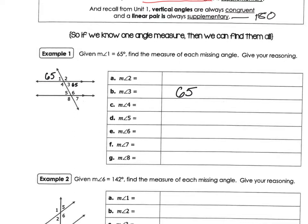A straight line equals 180 degrees, so to find angle two, you do 180 minus 65, and what you get is 115. So angle two would be 115 degrees.